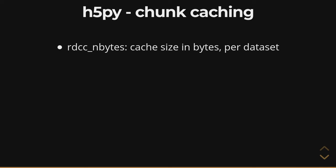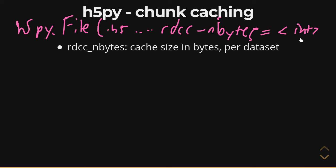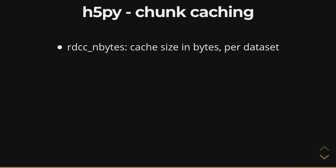This parameter is passed during H5Py.File. So you would open up H5Py.File and then pass in rdcc_nbytes with some integer as the value. It's just a parameter in the actual file call. rdcc_nbytes sets the chunk cache size in bytes on a per dataset level.